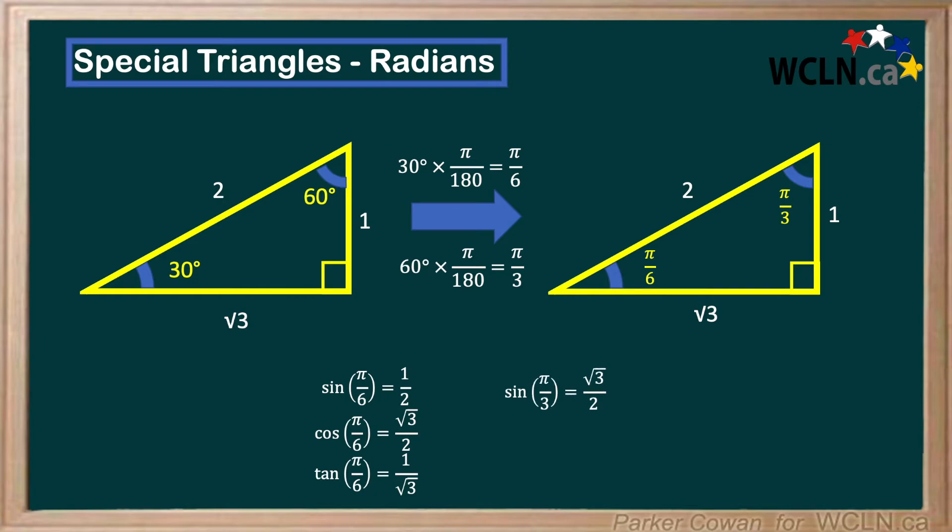Moving on to pi over 3, sine pi over 3 gives root 3 over 2, cos pi over 3 gives 1 over 2, and tan pi over 3 gives just root 3.